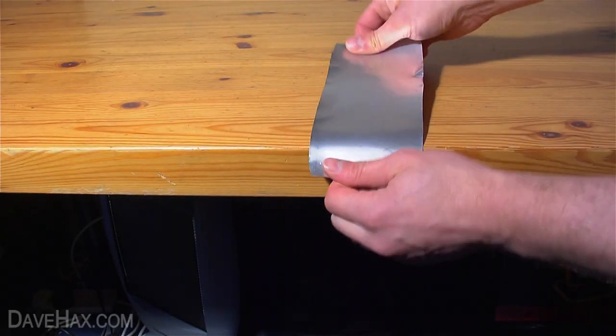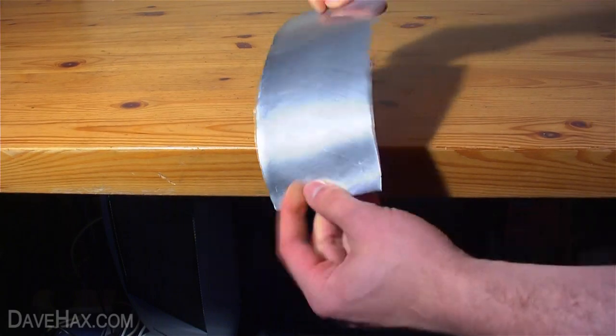Next, we're going to take the curl out of the tin by running it back and forth over the edge of the table until it's flat, like this.